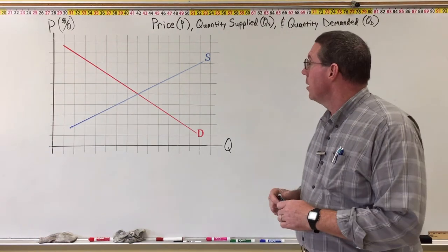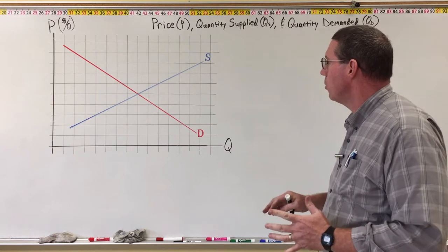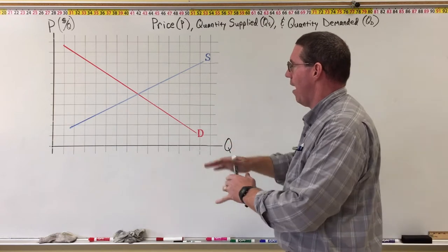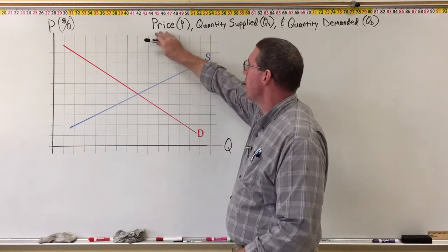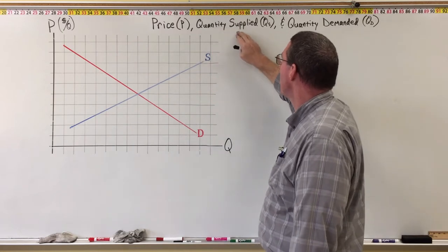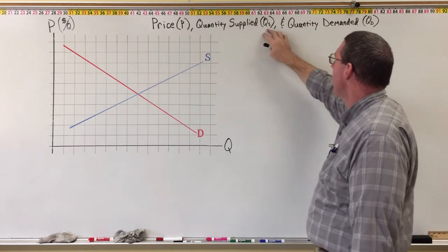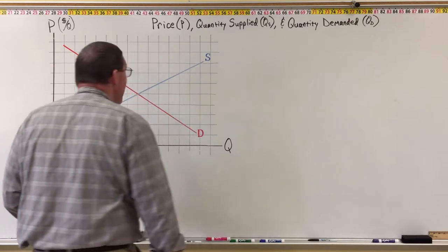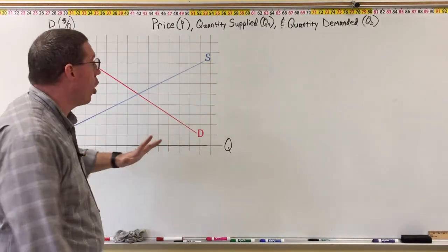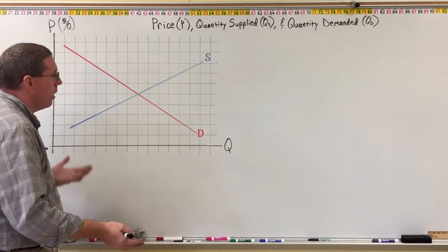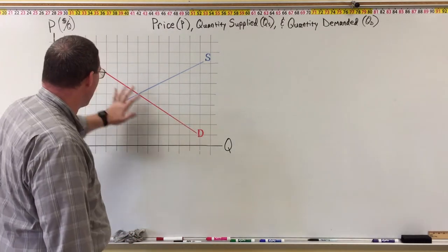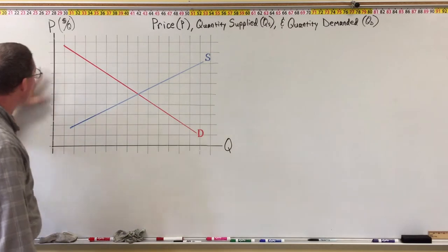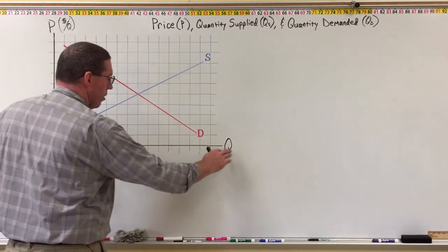What I want to do in this segment is show you how to mathematically use a market graph — how to identify the price, given by P, the quantity supplied, given by Q sub S, and the quantity demanded, given by Q sub D. These are simply coordinates on the coordinate plane, where vertical coordinates represent price and horizontal coordinates represent quantity.